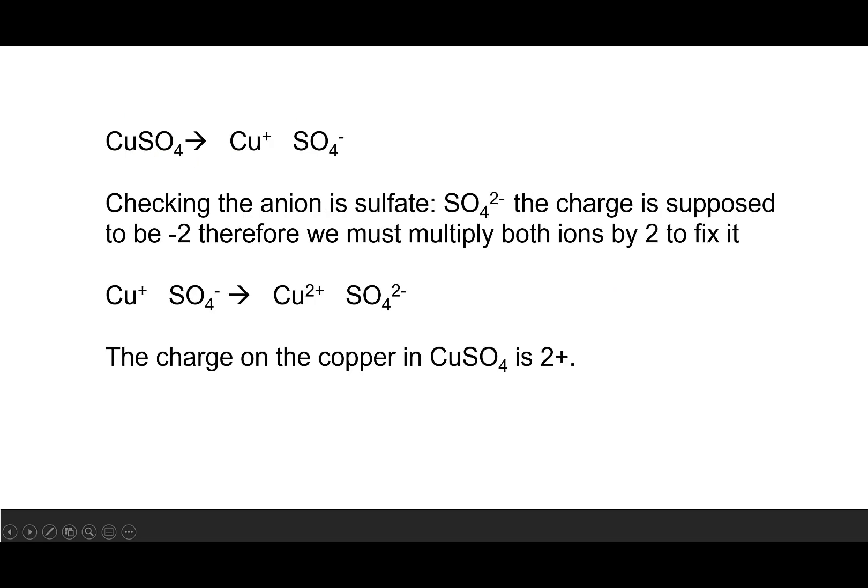We've got one more example with CuSO4. I've got this polyatomic ion that I recognize, so I'm going to break this up into Cu+ and SO4-. When I look up the anion though, sulfate is actually SO4 2-. This must have been simplified, so I need to correct for that by multiplying the charge of both by two. The copper within CuSO4 has a charge of 2+.